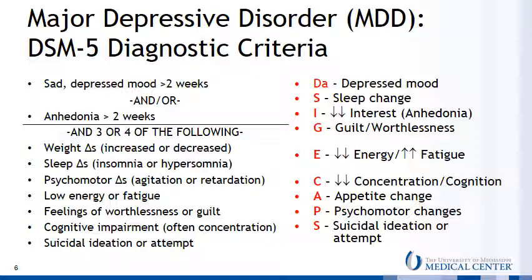These include four vegetative symptoms such as changes in weight, sleep, or psychomotor activity, or reduced energy and increased fatigue. Notably, the majority of vegetative symptoms are bi-directional — symptoms are considered present if the patient displays more or less of the symptom than normal. The remaining three include feelings of worthlessness or guilt, cognitive impairment, or suicidality.